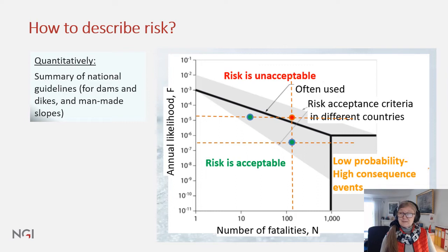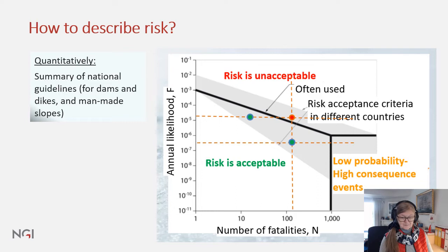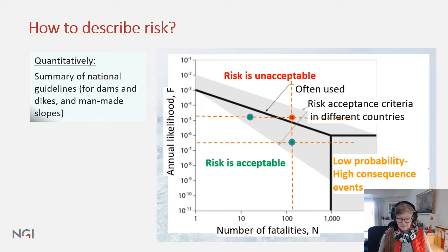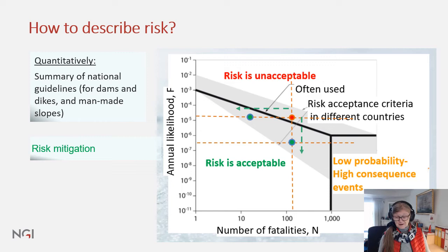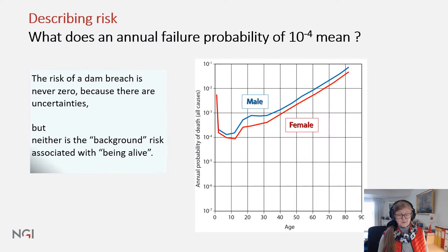You can also describe risk in a quantitative manner. In this plot, we have the annual likelihood of an event occurring on the vertical axis — 10 to the minus one per year — and on the horizontal axis the number of fatalities. This is a log-log plot. We have assembled all the national guidelines for dams and dikes and man-made slopes in the gray area shown here. The black line is the one most commonly used in different countries. If a dam plots at a given location, mitigation tries to reduce the likelihood in the vertical direction, or reduce the elements at risk, their vulnerability, or build evacuation roads.